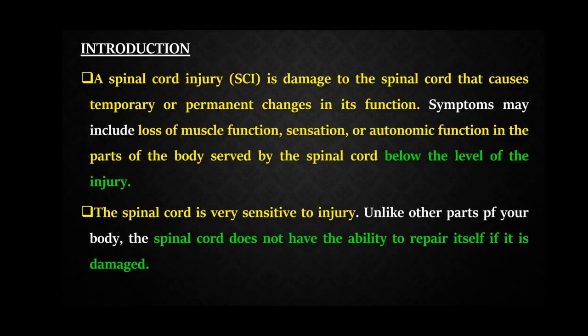Now we are going to study spinal cord injury in detail. As already defined, it is a damage to the spinal cord which causes temporary or permanent changes in its function. Symptoms may include loss of muscle function, sensation, or autonomic function in the part of the body served by the spinal cord below the level of injury. It is very important to note that loss of muscle function, sensory function, and autonomic function occurs below the level of injury. The spinal cord is very sensitive to injury. Unlike other parts of the body like the brain, it cannot repair or rearrange itself when damaged. Once the spinal cord is damaged, it is damaged for life.